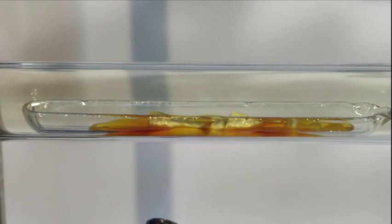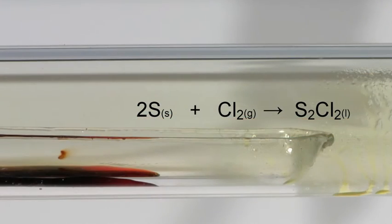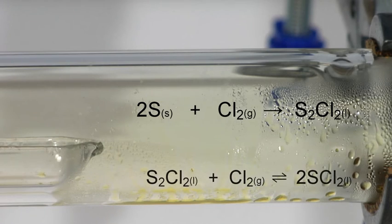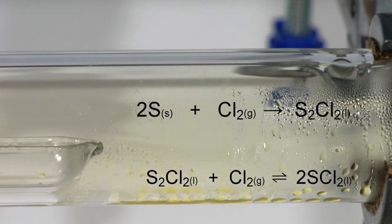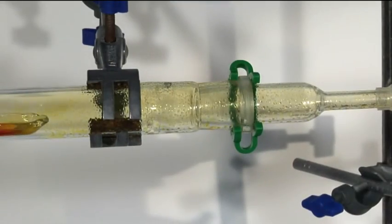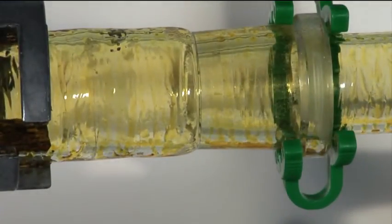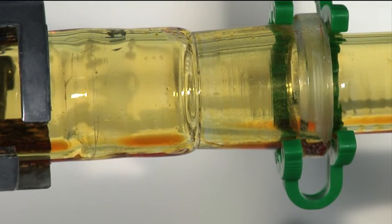The major product of the reaction is disulfur dichloride. Some sulfur dichloride will also form in an excess of chlorine, but this compound is fairly unstable and will disproportionate to disulfur dichloride. Pure disulfur dichloride is a pale yellow compound, and sulfur dichloride is dark red.